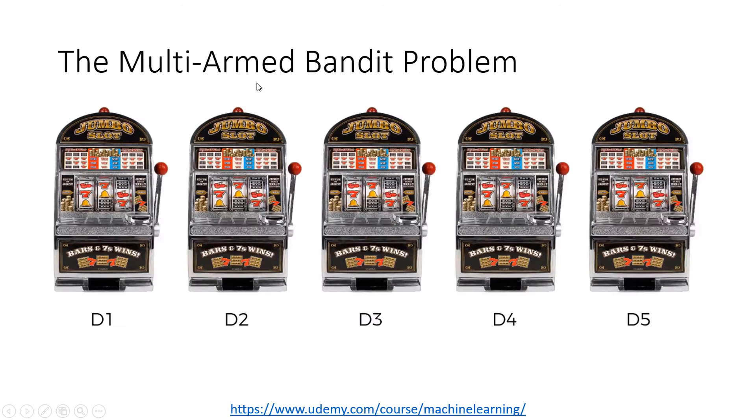Hello. Today I'm going to talk about the upper confidence bound algorithm, the UCB algorithm. This algorithm is a reinforcement learning algorithm — it's the first reinforcement learning algorithm that we are going to talk about. In the next video, we are also going to talk about the Thompson sampling algorithm, which is also a reinforcement learning algorithm. We are going to use this algorithm to solve the multi-armed bandit problem, which we talked about in the previous video.